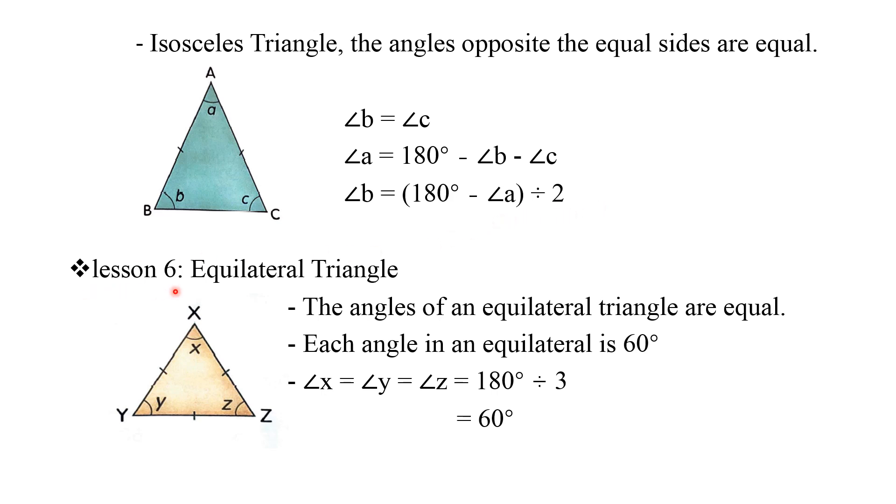Now we go to equilateral triangles. You already know an equilateral triangle is the triangle that has 3 equal sides. When it has 3 equal sides, it means that the angles of an equilateral triangle are equal. Each angle in an equilateral triangle is 60 degrees.